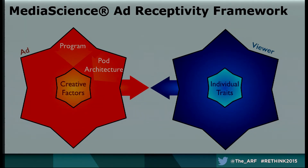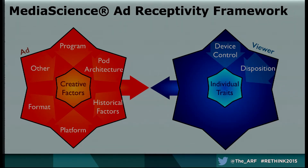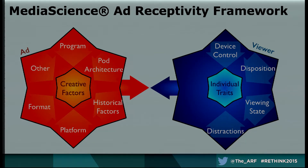Pod architecture — the structure of a long break versus a shorter break. Historical effects like frequency. Platform effects and differences across devices. Format effects — what are the different ad models and how do they moderate the effect? And for the viewer: their ability to control the device, their disposition. We've done a lot of work on brand integrations, demonstrating how the integration fundamentally frames how they then experience the subsequent ad exposure, along with things like product category. The viewing state, their motivation for watching television, the nature of distractions that are present, and the social influences that moderate their experience.